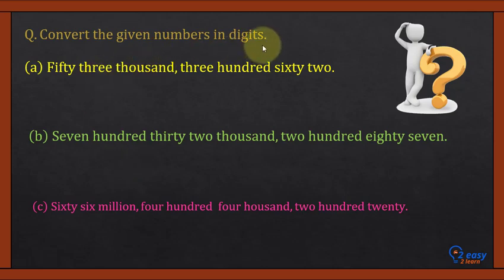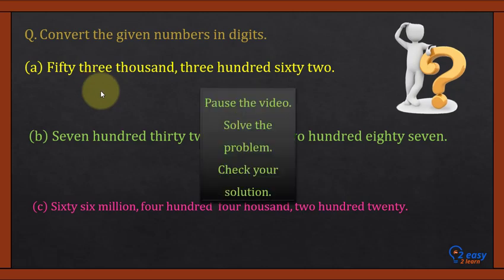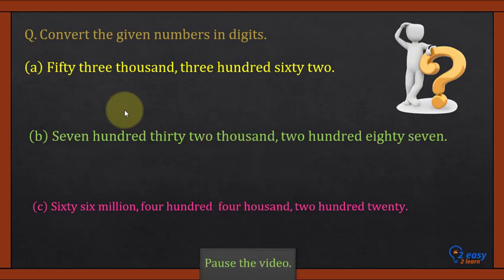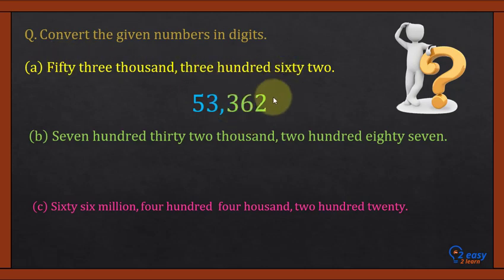Convert the given numbers into digits. Numbers are given in words and we have to convert them into digits. The first step is to identify the main groups. Fifty-three thousand — this is the thousands group. Three hundred sixty-two — this is the hundreds group. We will write digits for each group. So fifty-three thousand three hundred sixty-two can be written in digit form as 53,362.